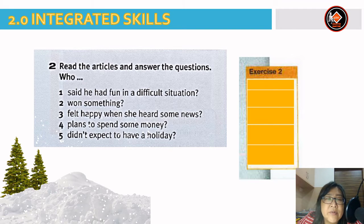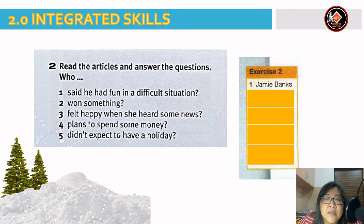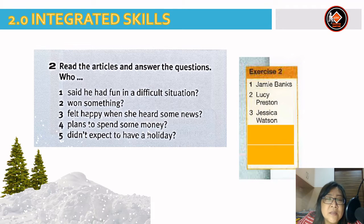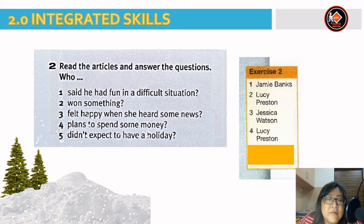Now let's continue with exercise 2. Read the articles and answer the questions. Who said he had fun in a difficult situation? — Jamie Banks. Who won something? — Lucy Preston. Who felt happy when she heard some news? — Jessica Watson. Who plans to spend some money? — Lucy Preston. Who didn't expect to have a holiday? — Jessica Watson.